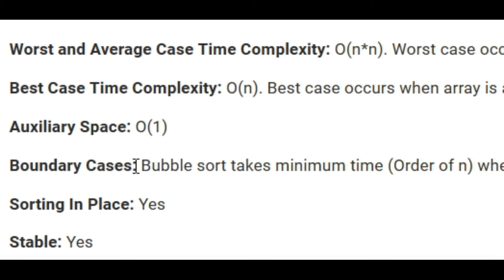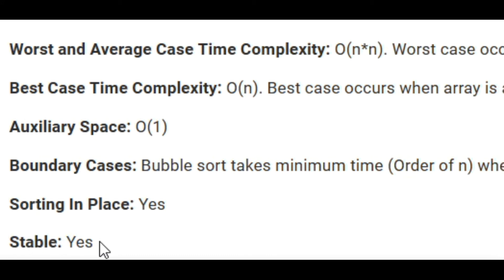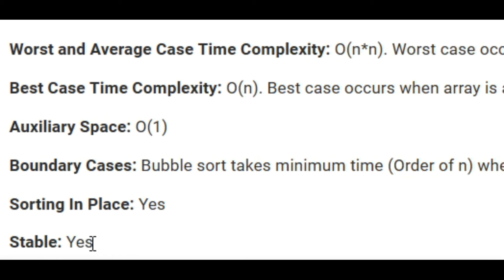The worst case boundary is when the list is in reverse sorted order, and the best case is when it's already sorted. Does it sort in place? Yes — we don't create any new lists and copy values over. We sort in the list we're already given. And is it stable? Yes, it is. It's not going to swap two values that are equal to each other. Some sorting algorithms do swap equal values, and we will look at those.